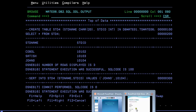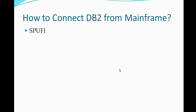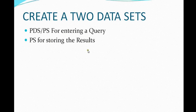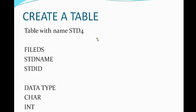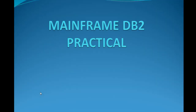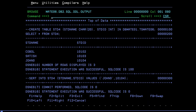We have connected to the mainframe terminal and connected to the DB2 subsystem with the help of SPUFI. We created two datasets — one for querying and another for storing results. Then we connected to SPUFI, created a table called student4 with fields and data types, inserted a few records into the table, and finally retrieved the records from the table. That's all for today's video. If you like this video, kindly subscribe to my YouTube channel for more updates to your inbox. Thank you so much for watching — have a great and pleasureful day.